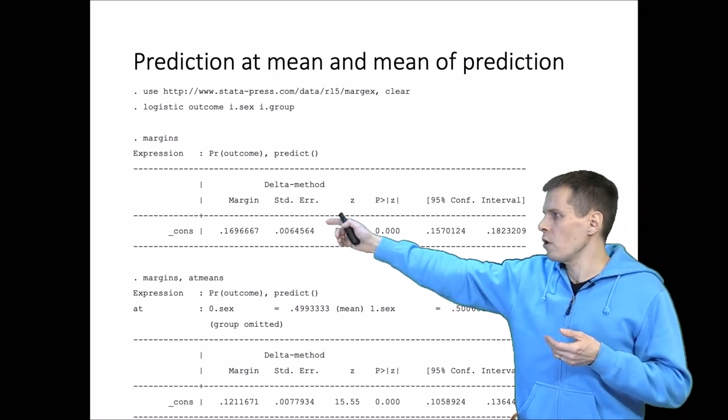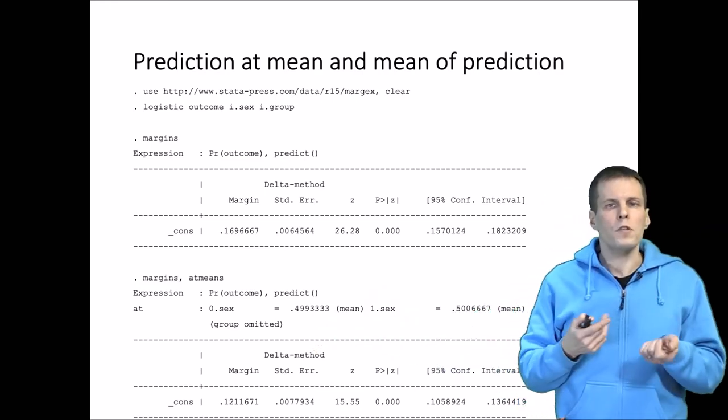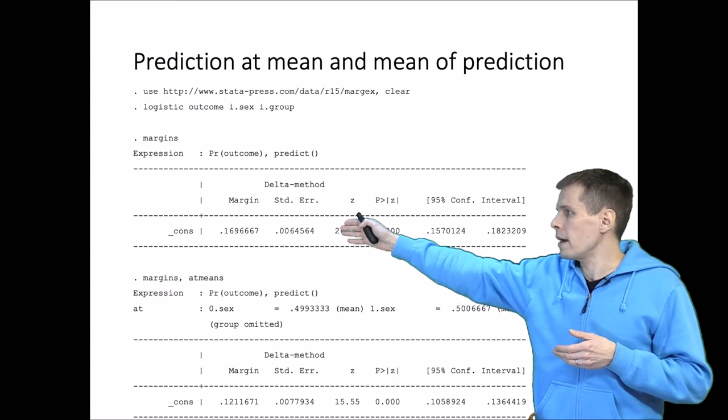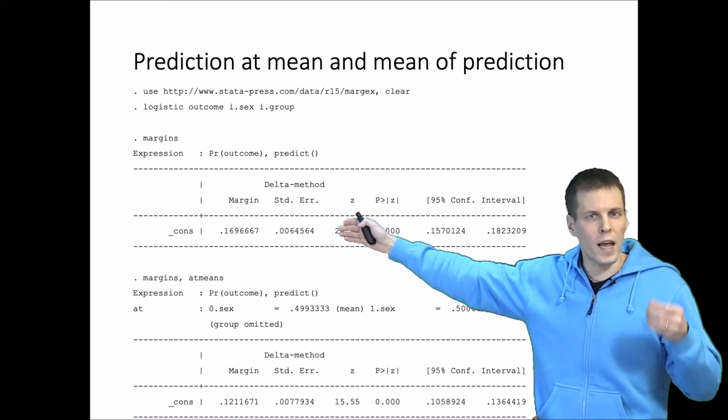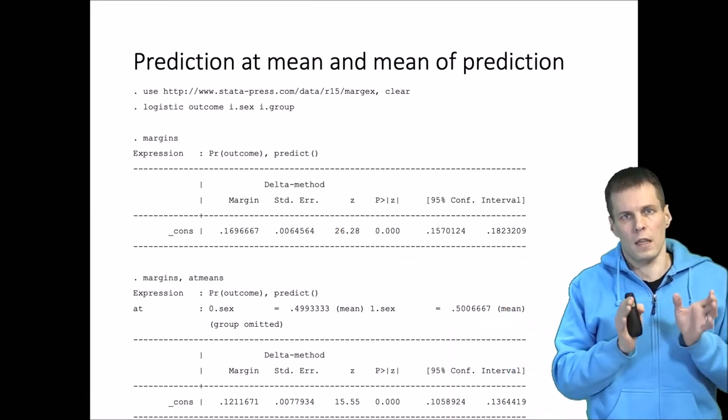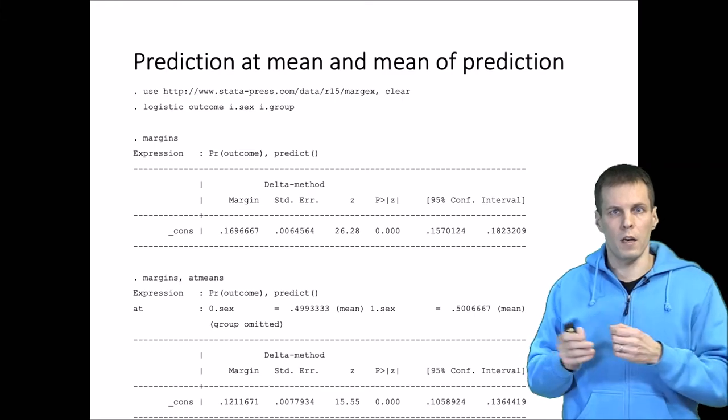What is the difference and why do we get such different values? This is 0.17, this is 0.12, which is a rather large difference. The first here basically estimates predictions for every case at the values that the case happens to have with X variables, and then calculates mean of those predictions.